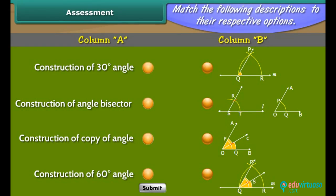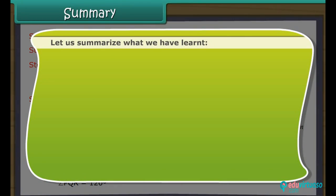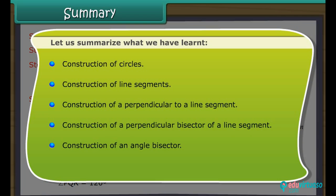Assessment. Match the following descriptions to their respective options. Summary. Let us summarise what we have learnt: construction of circles, construction of line segments, construction of a perpendicular to a line segment, construction of a perpendicular bisector of a line segment, and construction of an angle bisector.